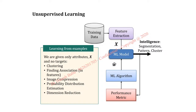When we go for unsupervised learning, unsupervised means we don't have any target variable — there is no output variable in our analysis. If all the variables are independent input variables, we go for unsupervised learning. Algorithms under unsupervised learning include clustering, association, image compression, probability, and dimensionality reduction.